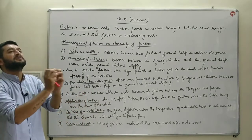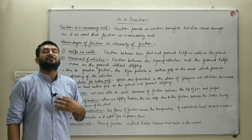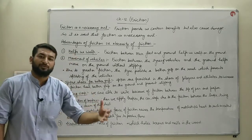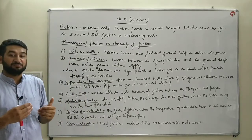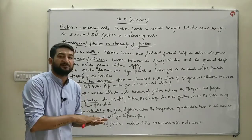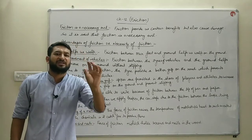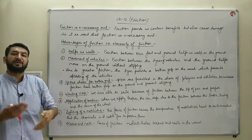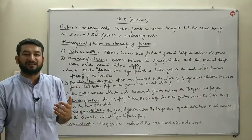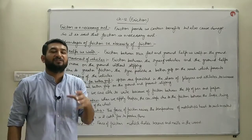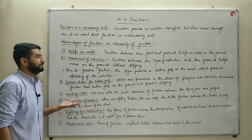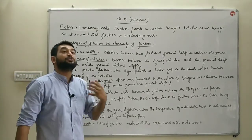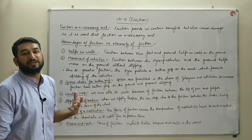The second advantage: movement of vehicles. Vehicles are moved on the ground because of friction between the tires and the ground. More grooves over the tires means less skidding. Tires have certain grooves which bring irregularities, and those irregularities provide better grip for the tires with the ground. More friction between the tire and the surface means more grip for that vehicle.